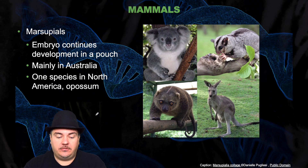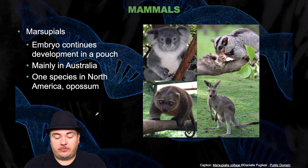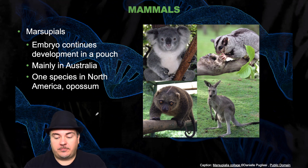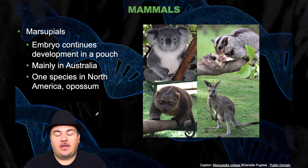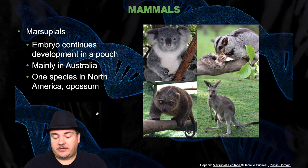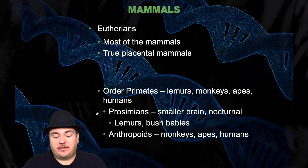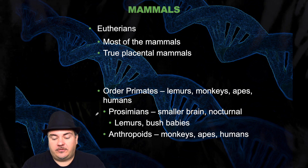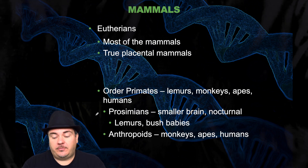Then we have the marsupials. In the marsupials, the embryo continues development in a pouch. You find these mainly in Australia, where they have lots of marsupials like kangaroos and koala bears. However, in North America we only have one species of marsupial and that's the possum. Then you have the eutherians, which are most of the mammals — these are the true placental mammals. Within the eutherians you have the primates, which are made up of the lemurs, monkeys, apes, and humans.